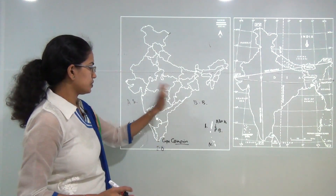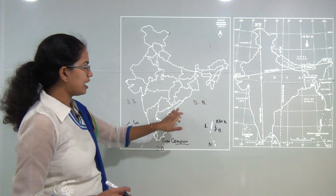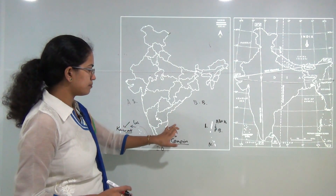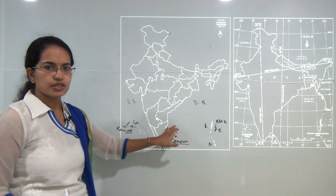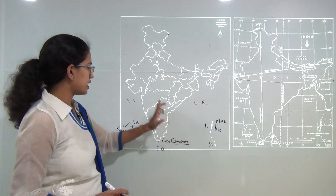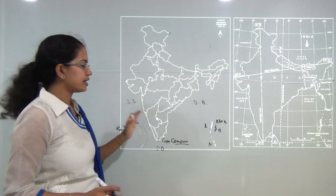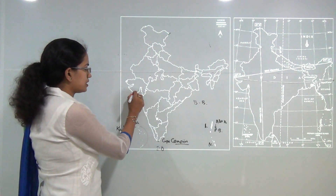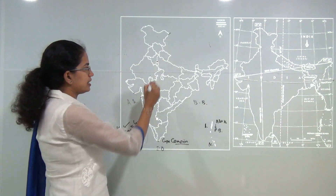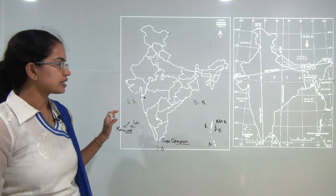Other union territories are dispersed across the country. Puducherry has three enclaves: Puducherry itself, Karaikal on the eastern side, and on the western side there are Daman and Diu, and Dadra and Nagar Haveli. Delhi is also a union territory. These are some of the important union territories of India.